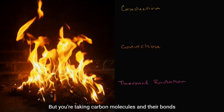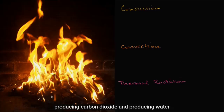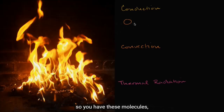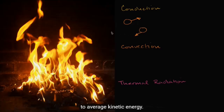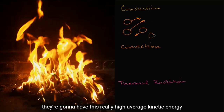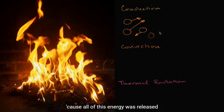You're taking carbon molecules and their bonds, and then in the presence of oxygen and some heat, you have a combustion reaction producing carbon dioxide and producing water and even more energy than you put into it. So it's producing a lot of energy, and that energy is going to excite the molecules around it. These molecules end up getting a lot of kinetic energy, and temperature is proportional to average kinetic energy. So the molecules right near the reaction are going to have this really high average kinetic energy because all of this energy was released from that combustion reaction.